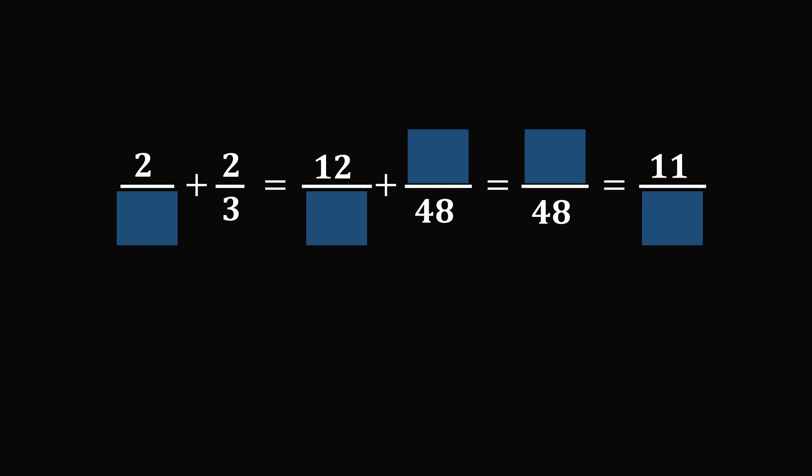So a natural place to start the question is to go from left to right. We are adding two fractions, 2 divided by some unknown denominator, plus 2 divided by 3. So your first instinct might be to try to solve for this denominator. However, you don't have enough information at the beginning.